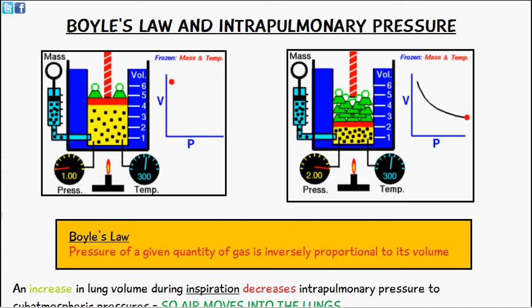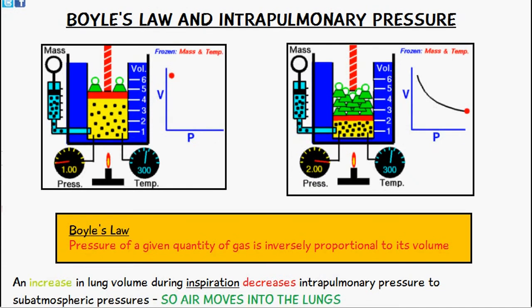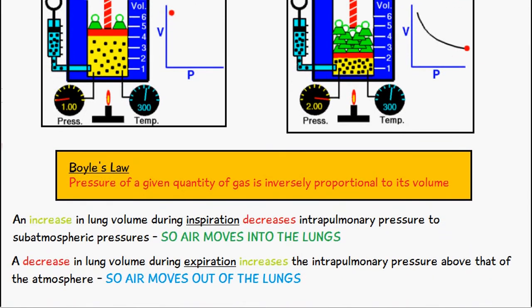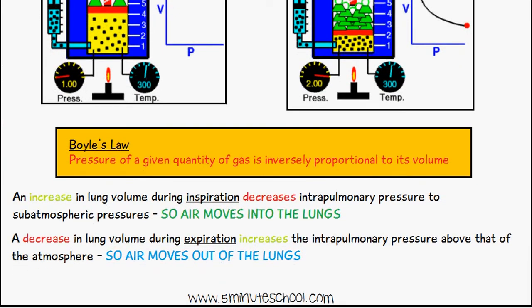Let's look at it in terms of intrapulmonary pressure and ventilation. If we increase the lung volume during inspiration — because we know that the diaphragm will contract and pull the lungs down, increasing the lung volume — what's going to happen is we're going to have a decrease in intrapulmonary pressure, and it's going to be below atmospheric pressure, so it drops to sub-atmospheric pressures.